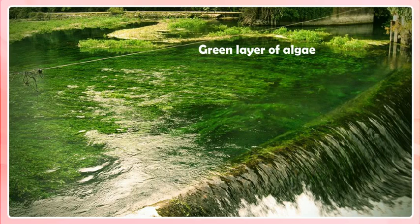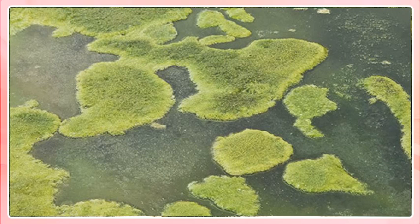Photosynthesis by algae. Many times we have seen patches of slimy green layer floating on the surface of a pond or lake or even in the stagnant parts of a river. Algae are a large group of simple plant-like organisms. Algae contain chlorophyll and produce food by photosynthesis just like plants. However, algae differ from plants because they do not have proper roots, stems and leaves.